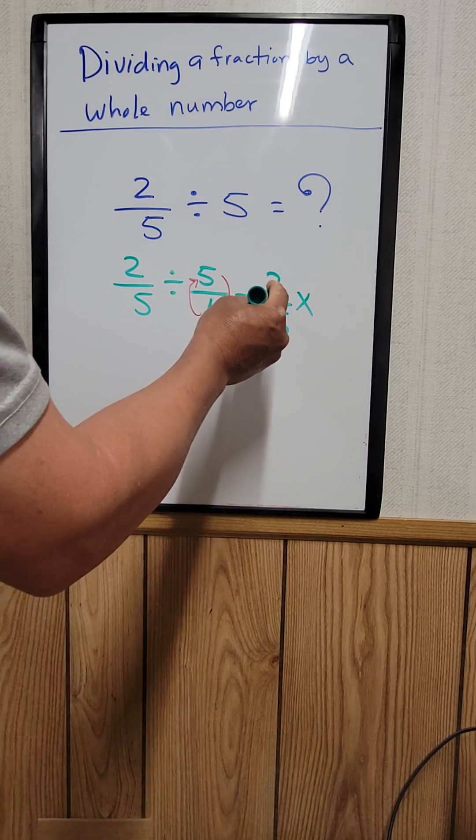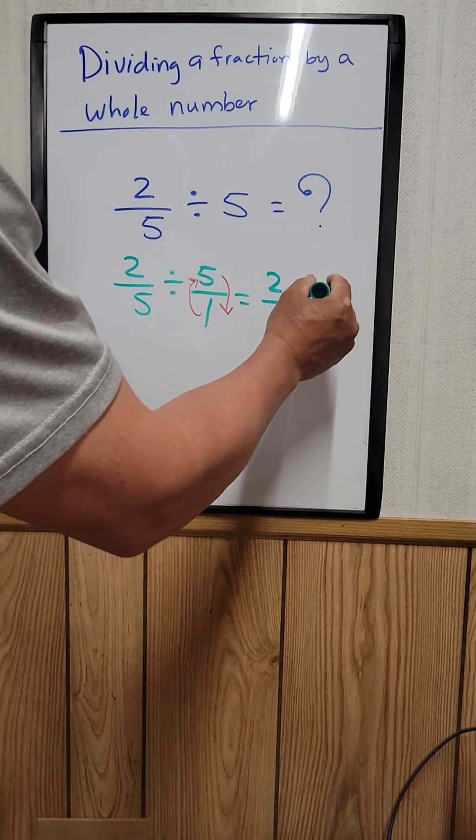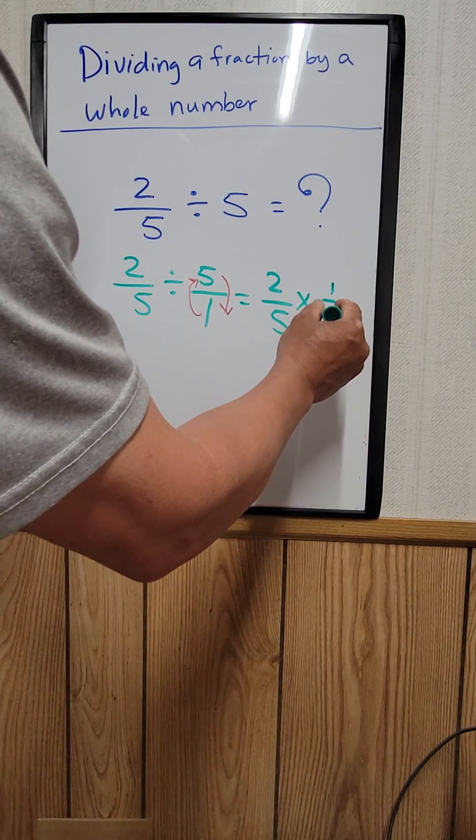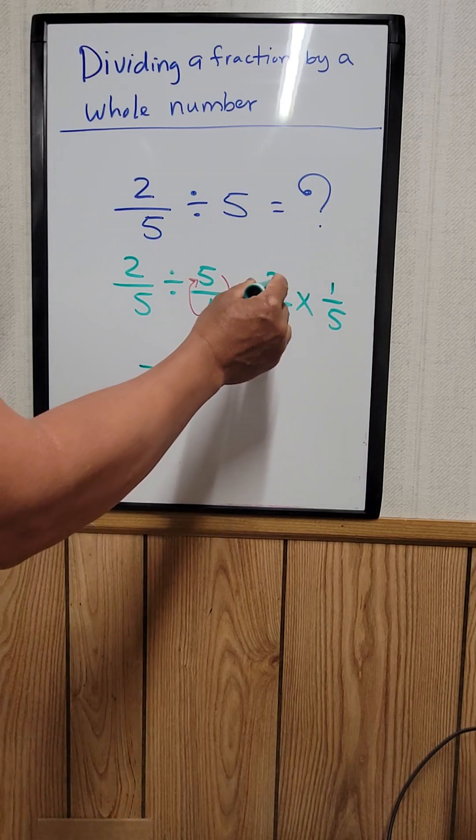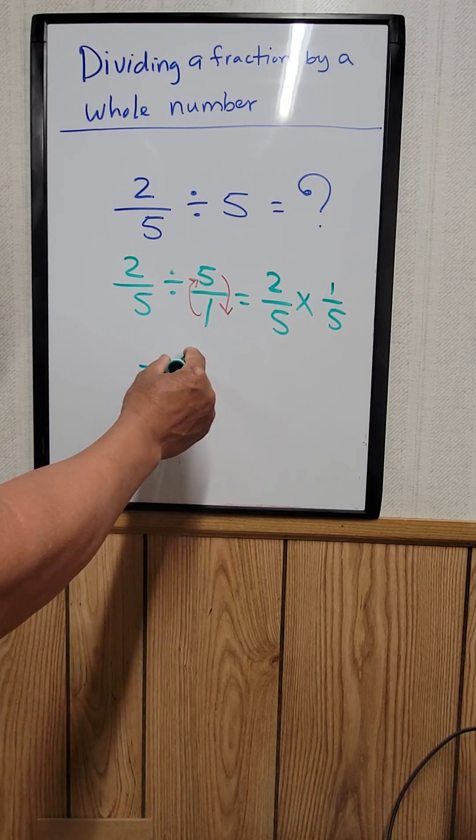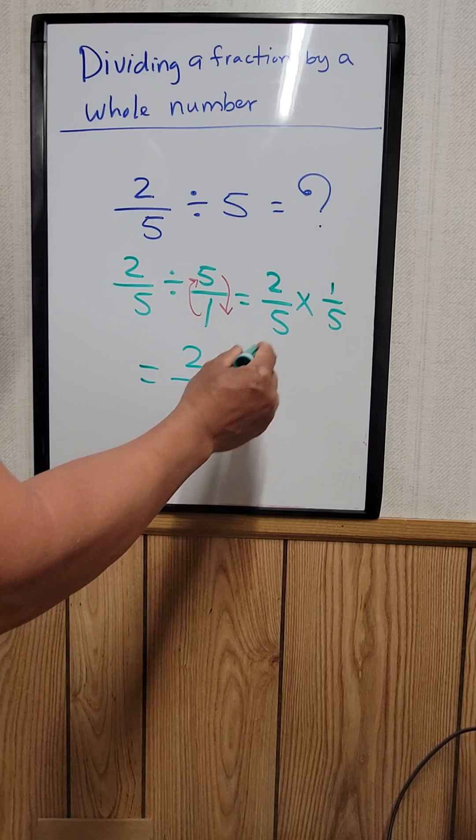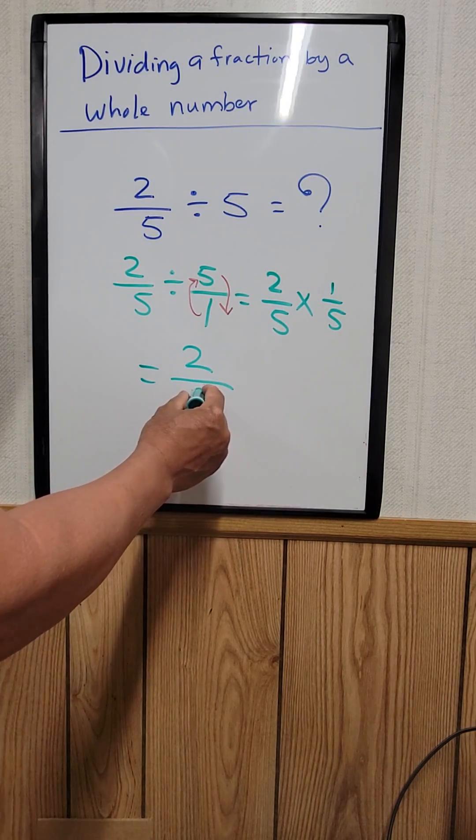So 2 fifths times 1 over 5. And that's equal to 2 times 1 is 2. And then 5 times 5 is 25.